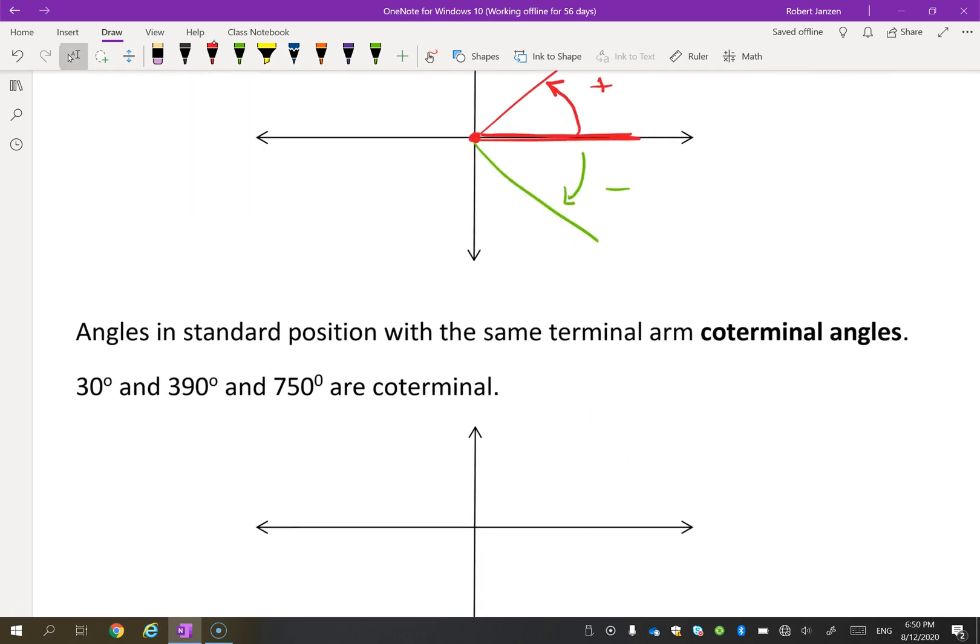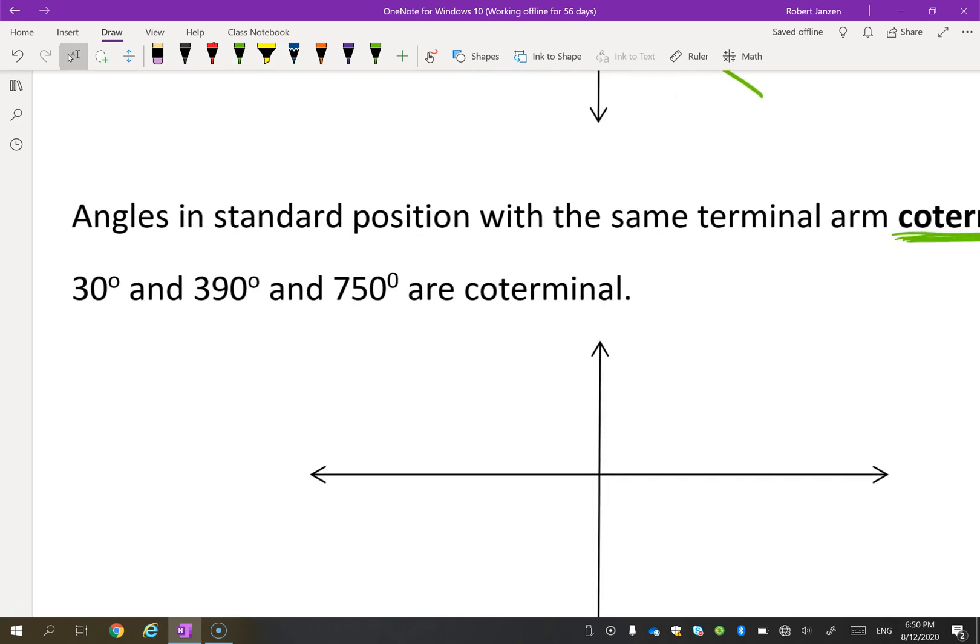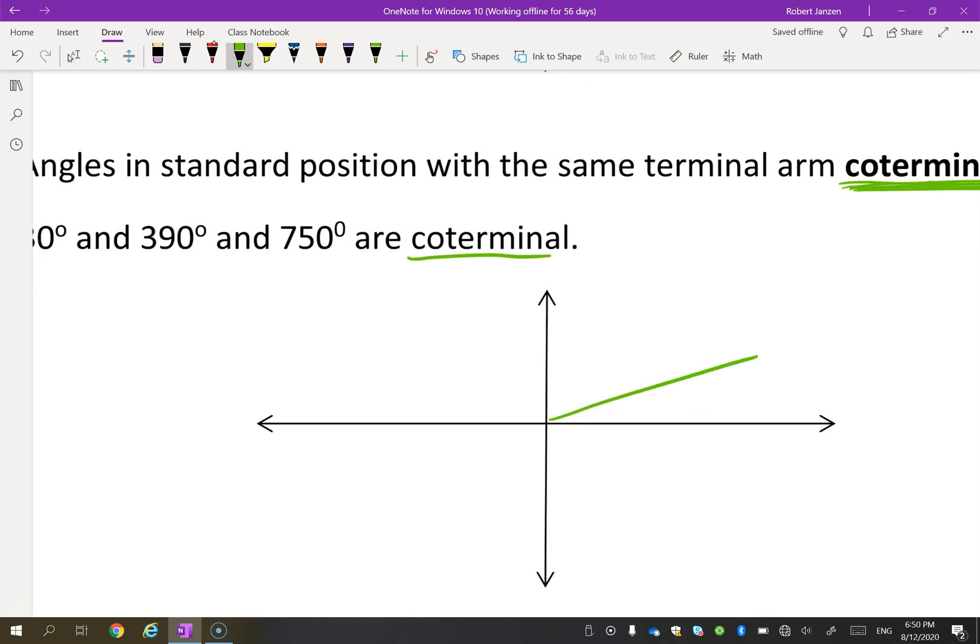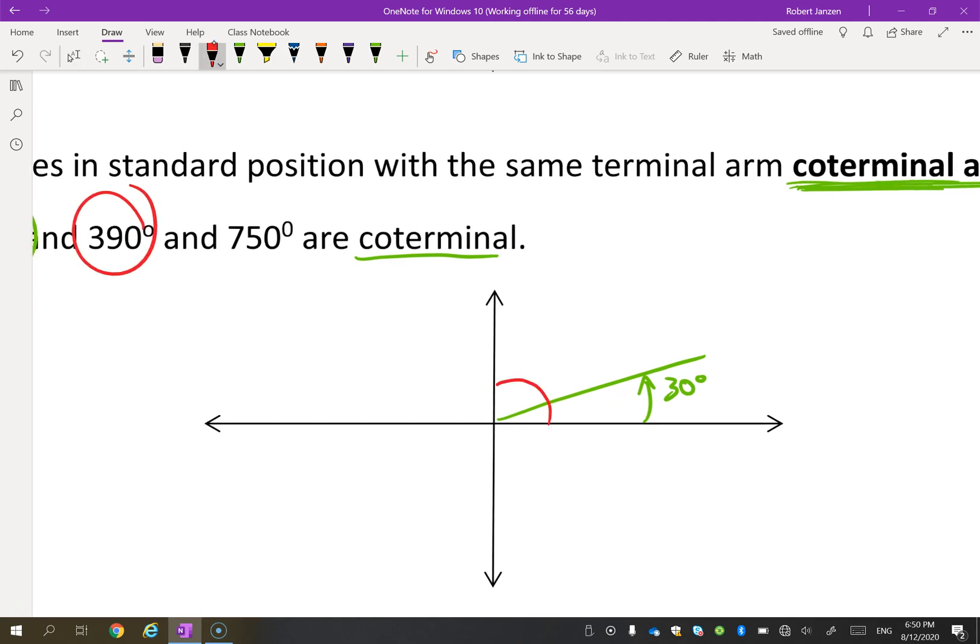We're going to talk about something called coterminal angles. Coterminal means ending in the same place. So if you look at these three angles, 30, 390, and 750, they are coterminal. Why? Well, 30 degrees would be about here. So that's our 30 degree angle. Now if you go 390 degrees, think about that for a second. If you go all the way around, this is 360, and if you keep going 30 more degrees, you end up at 390 degrees. And you can see that they have the same terminal arm. They end in the same place.